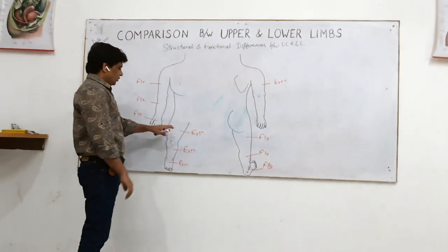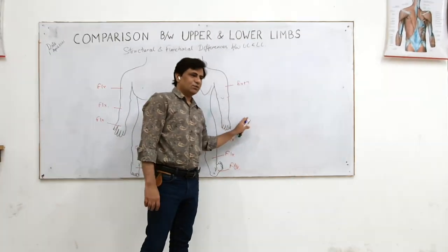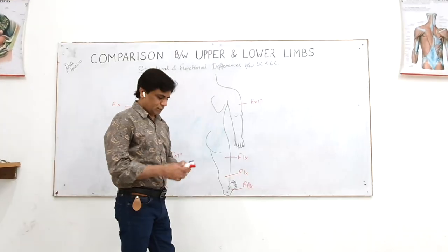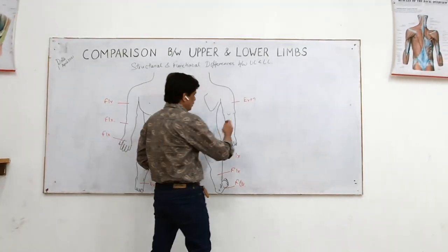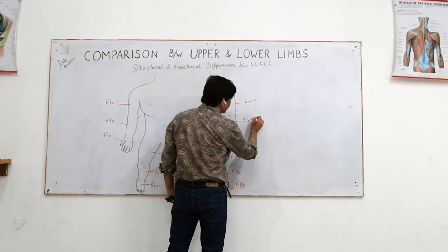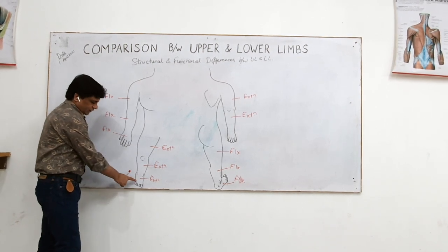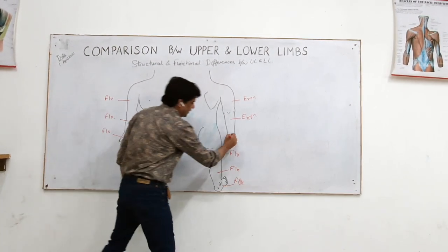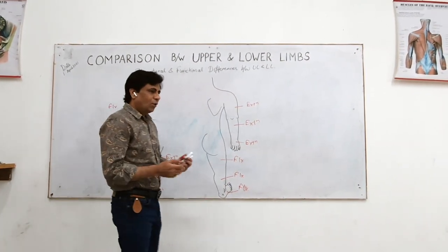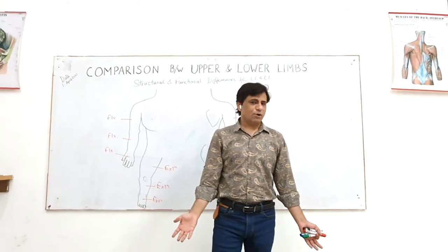The front of the lower leg is homologous to the back of the upper limb. So the back of the forearm is the extensor compartment, and this is the same as the front of the leg. The dorsum of the foot is the same as the dorsum of the hand — they are extensors. So all the compartments are 180 degrees opposite.